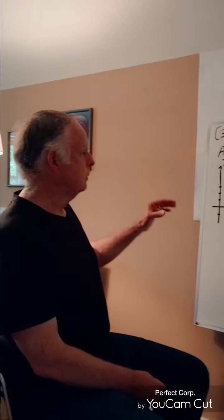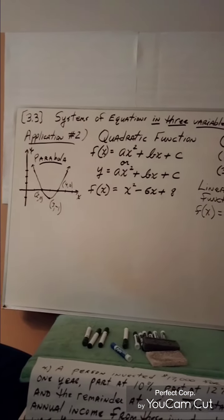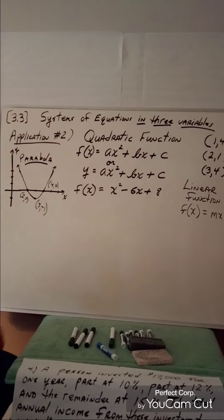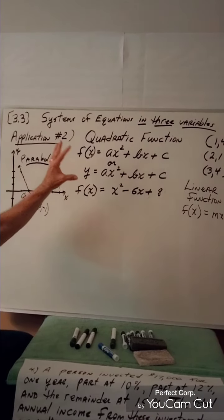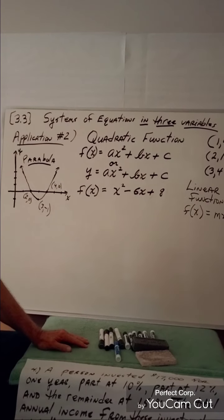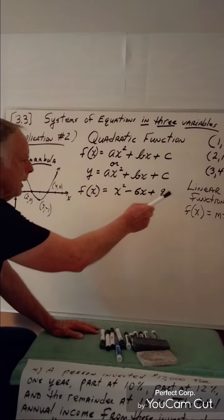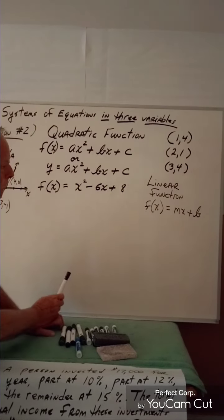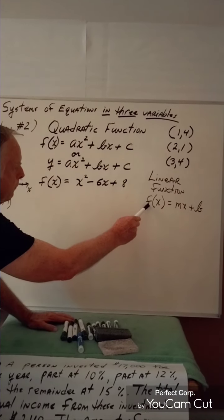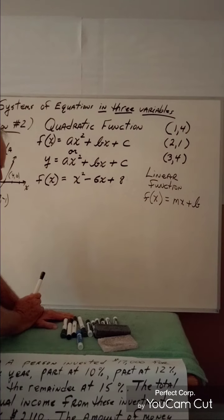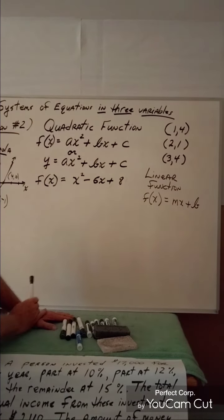Let me detail some things on this board before we look at the actual problem. At this point in the course, we have looked at one particular kind of function called a linear function. A linear function is written in slope-intercept form: f(x) = mx + b.